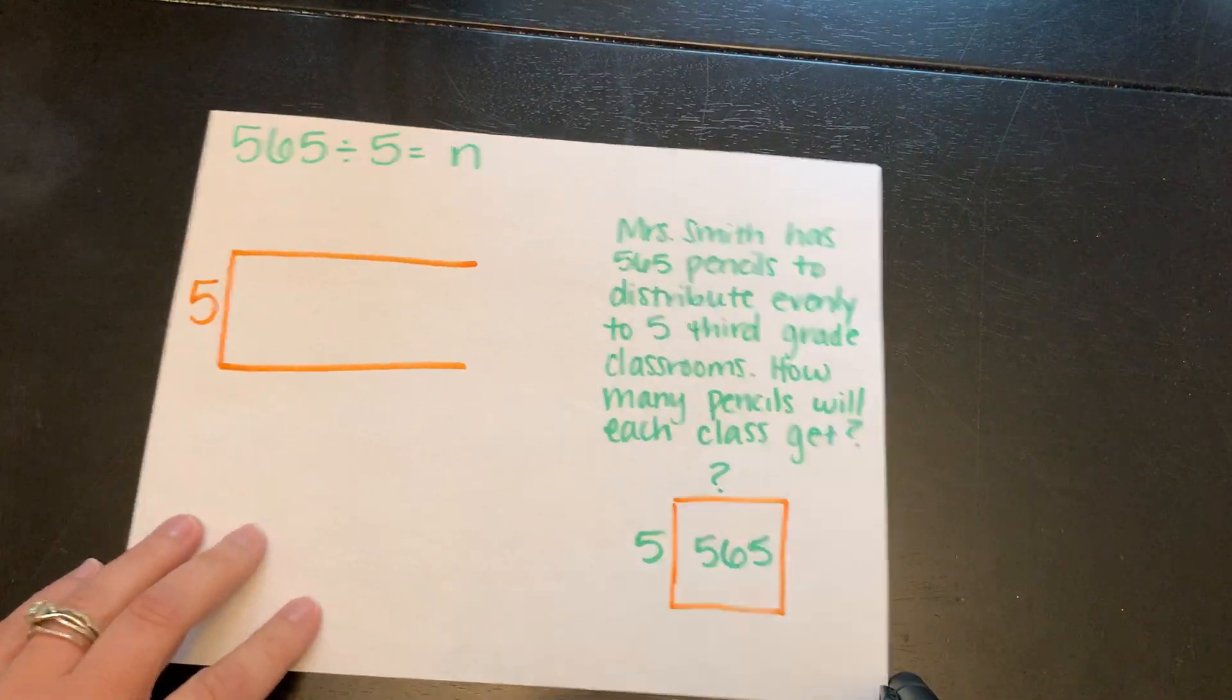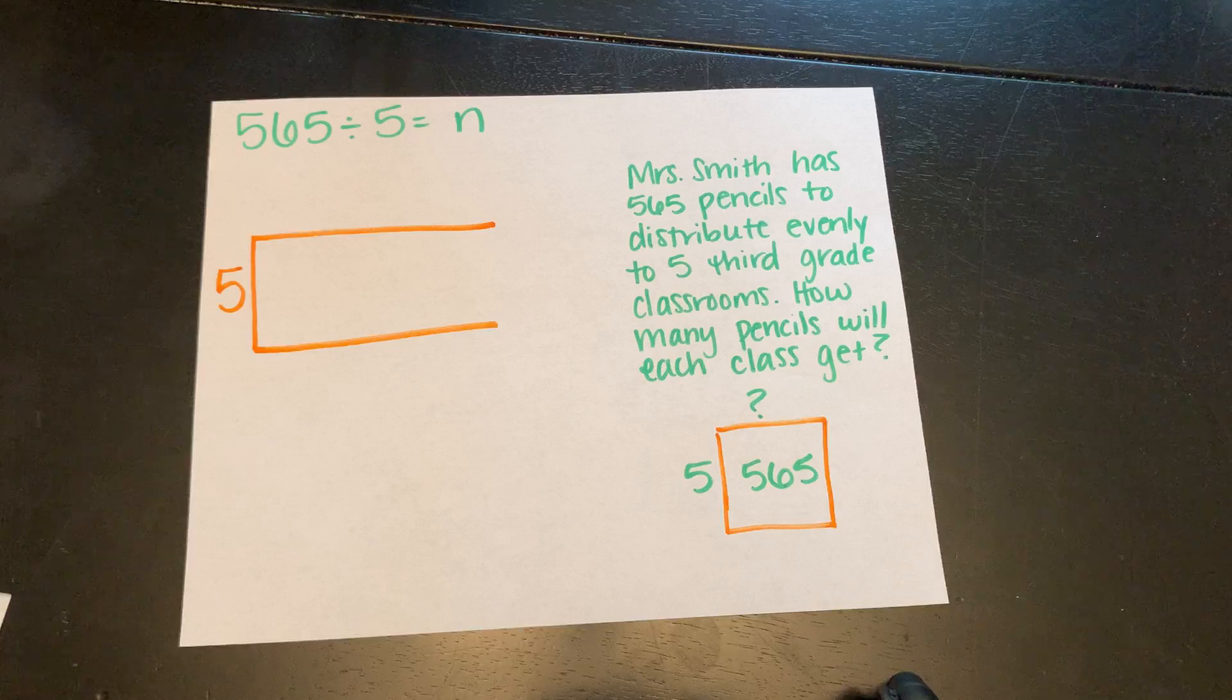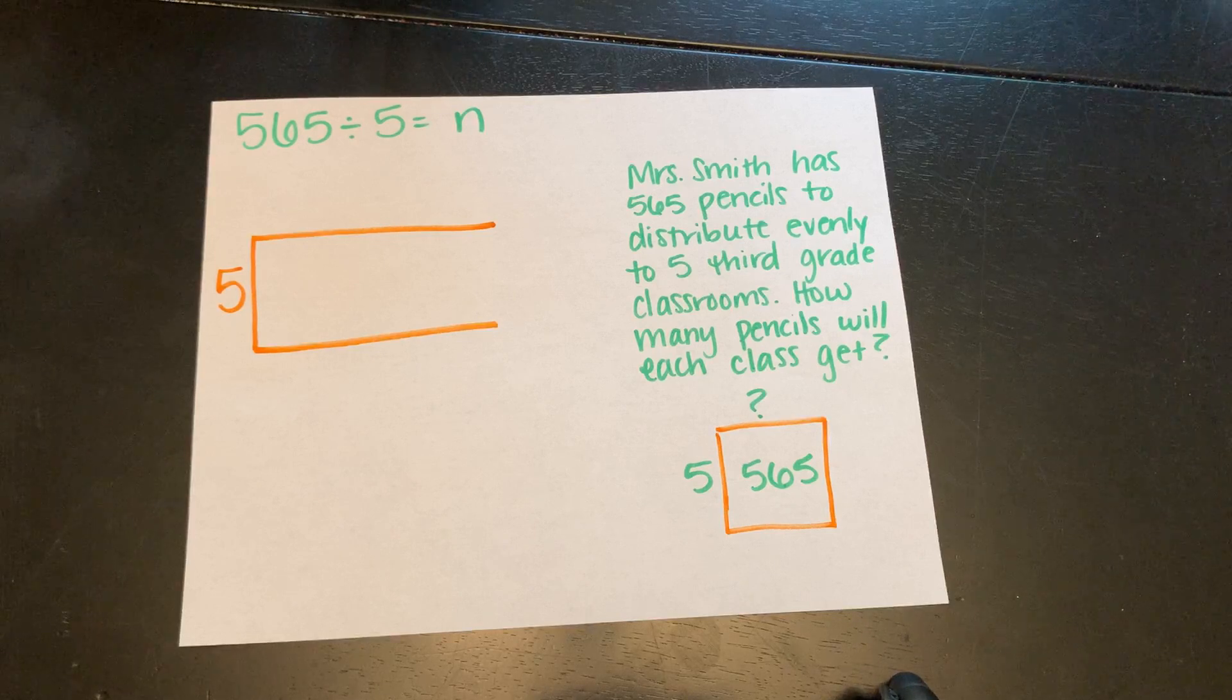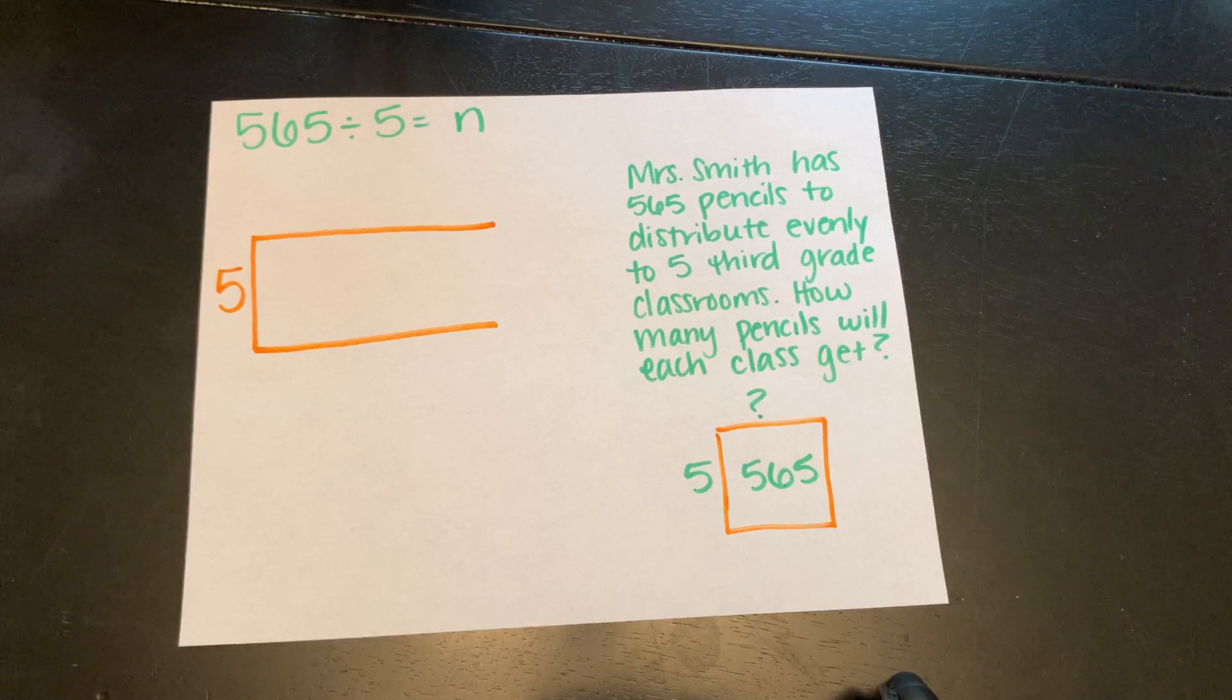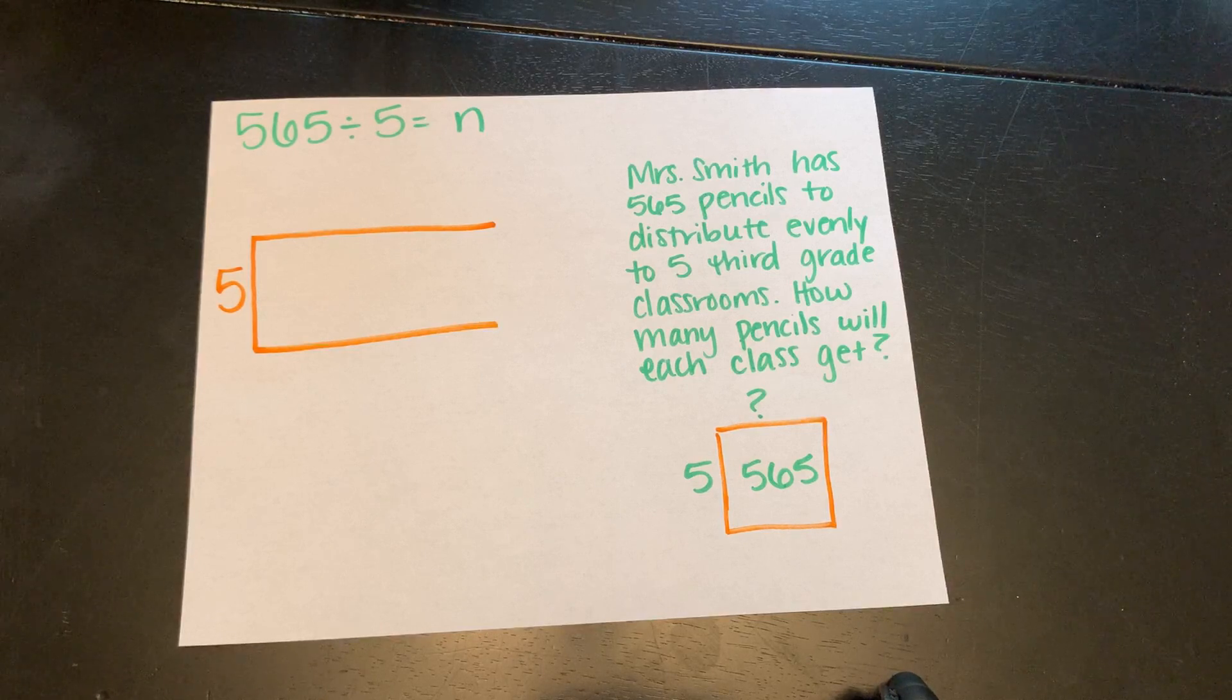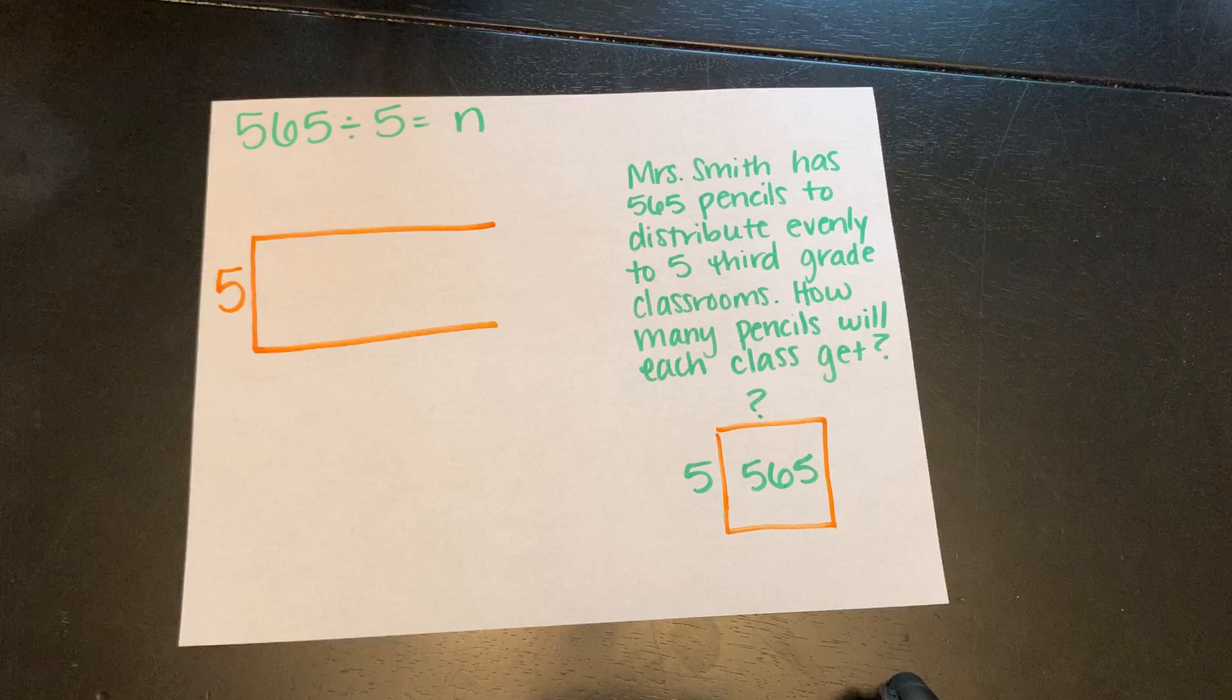Let's look at our first problem. We have 565 divided by 5 equals N. N represents that unknown number. That letter just represents a variable. We're going to look at this in the context of a word problem. Mrs. Smith has 565 pencils to distribute evenly to five third-grade classrooms. How many pencils will each class get?